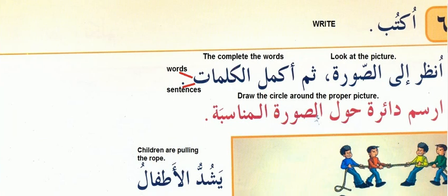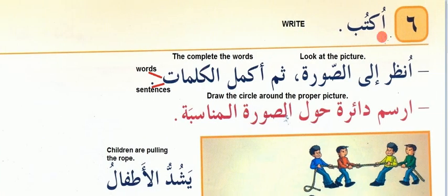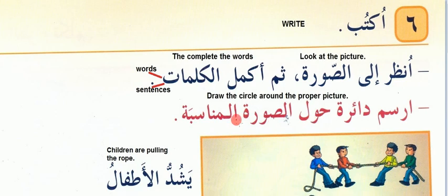Now the last page of this lesson. Uktub — write. Unzur ili — look at. Surah — picture. Summa — then. Akmal kalmat — complete words or sentences. Irsam daira — draw a circle around. Surah munazbah means proper picture.